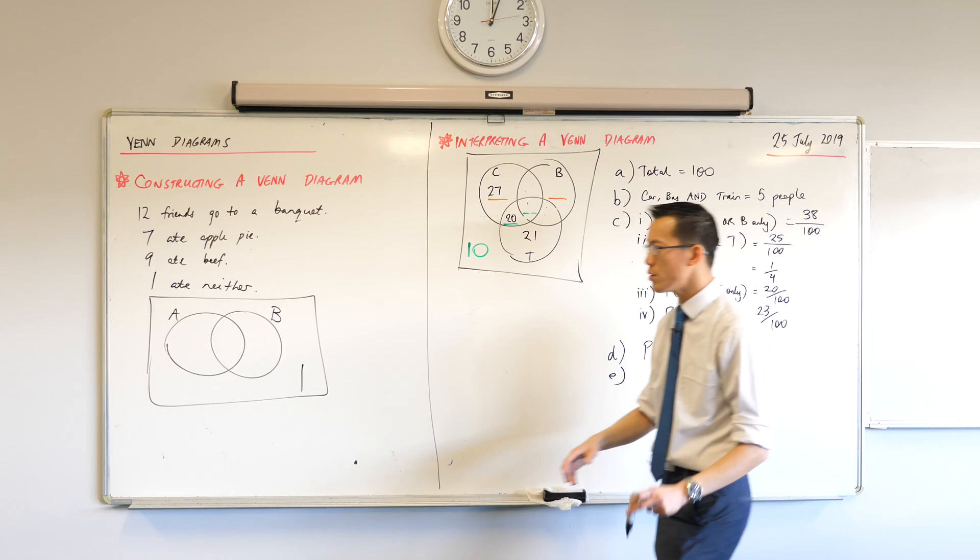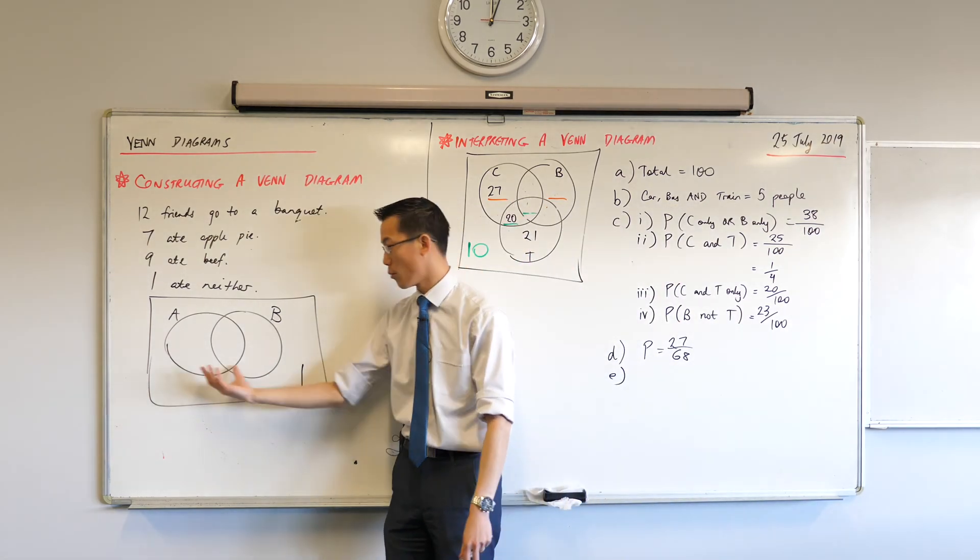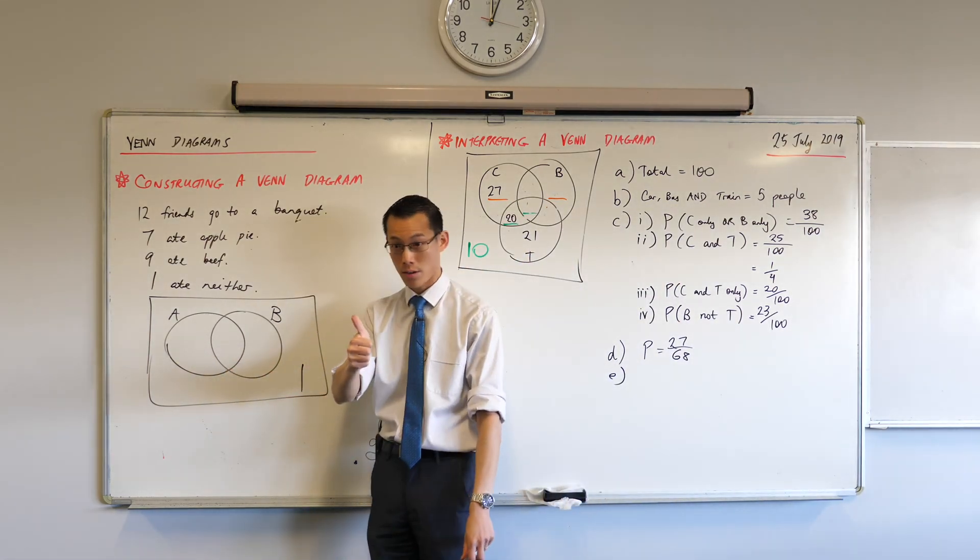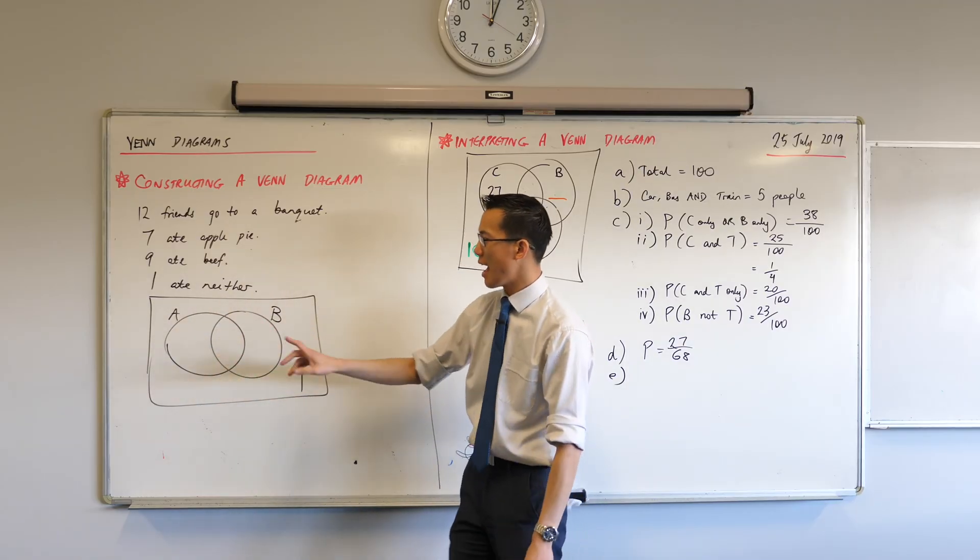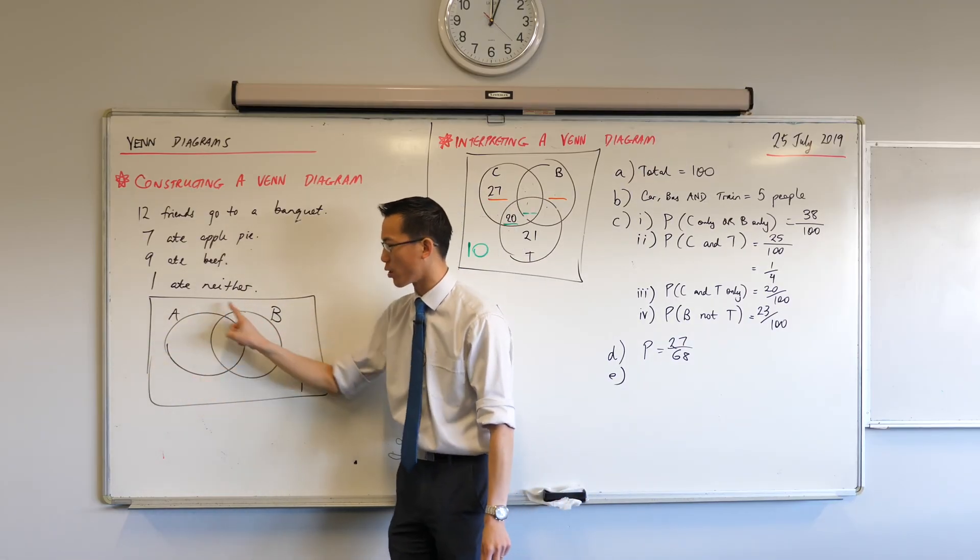There are 11 left, right? So those 11, do you agree, are somewhere inside the circles. So far so good? Okay, so 11 inside the circles. How many people will be in this A circle altogether?